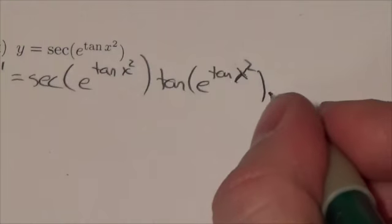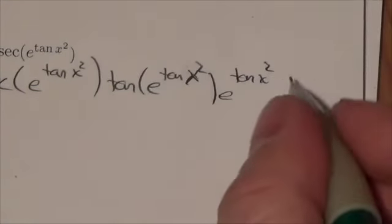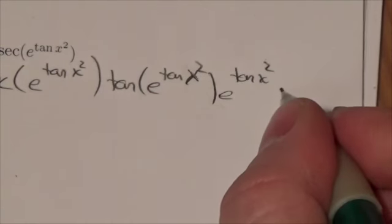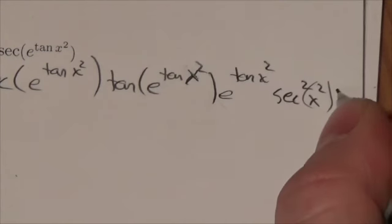the exponential function, which will be e to the tangent of x squared, because the derivative will be just itself. The derivative of the tangent will be the secant squared of x squared. Okay, and then multiply by the derivative of what's inside, 2x.